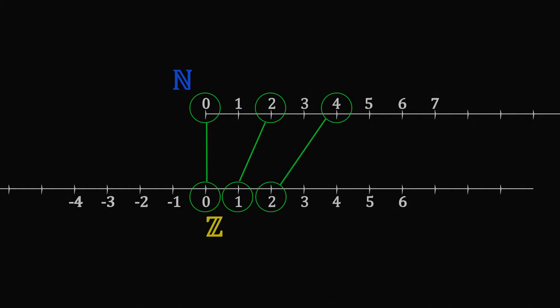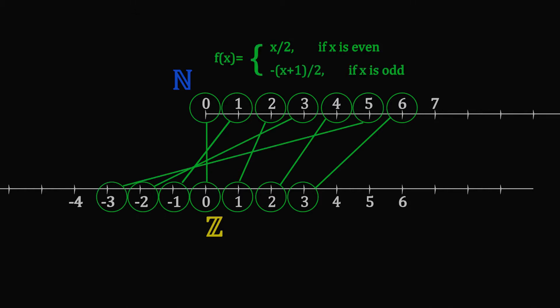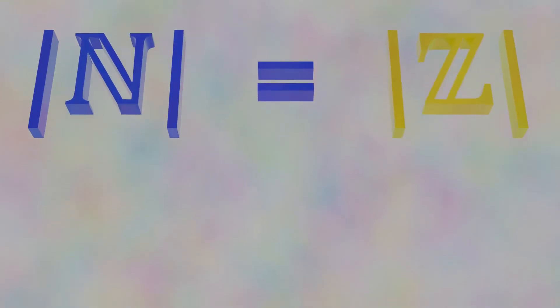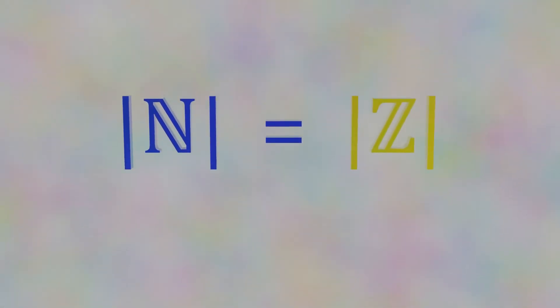First, we pair the even numbers with their halves. And then, we pair the odd numbers with the negative integers. We have just found a one-to-one correspondence, so we can say that the two sets have the same size, or cardinality.